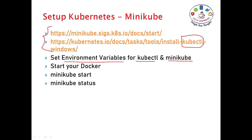Once we have downloaded these two things, we need to set environment variables for kubectl and Minikube. To work with Minikube in your local system, Docker should be running. Then if you use the `minikube start` command, automatically your Minikube will be ready, and `minikube status` will display the status. Using Minikube we can also create a cluster environment with two, three, or four nodes - just like in a cloud environment.